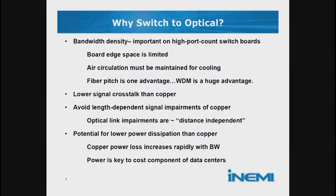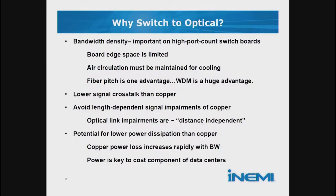By transferring the data optically, you can increase the data density — gigabits per square centimeter at the edge of the board — and therefore leave more room for cooling air. Also, there's lower signal crosstalk in optical than in copper. For distances around a data center, that's practically distance proof compared to copper. The signal impairments do not depend on the kinds of distances in a data center in fiber optics, especially single mode fiber optics.